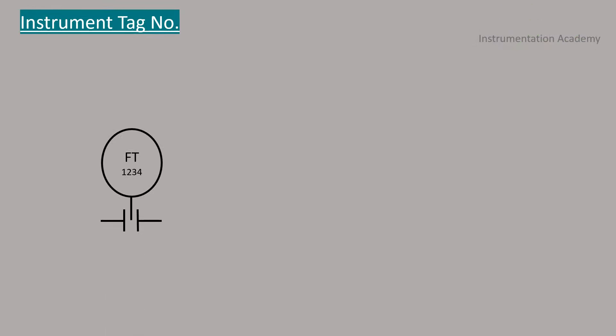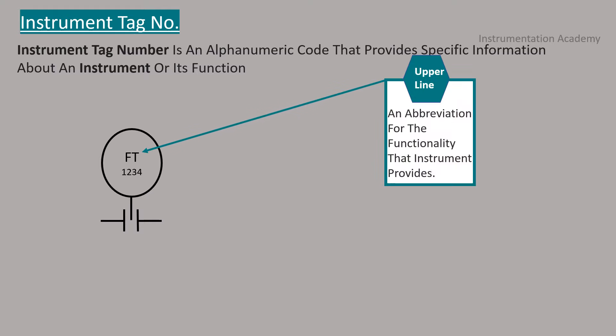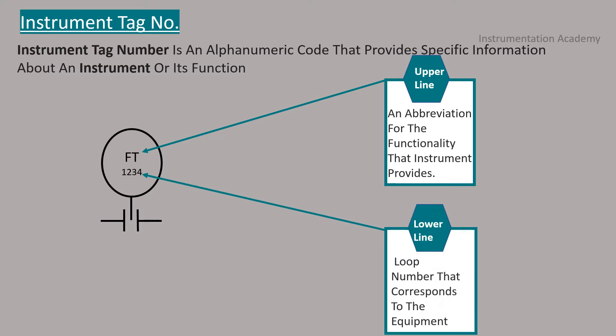Instrument tag number. Instrument tag number is an alpha numeric code that provides specific information about an instrument or its function. Instrument tag number has two lines in it. One is upper line. It is a short form for functionality that instrument provides. The second is lower line. It is a loop number that corresponds to the equipment in the plant. Since most plants have many instruments of same type, the unique number is applied so that each one can be individually identified. This number is known as loop number.